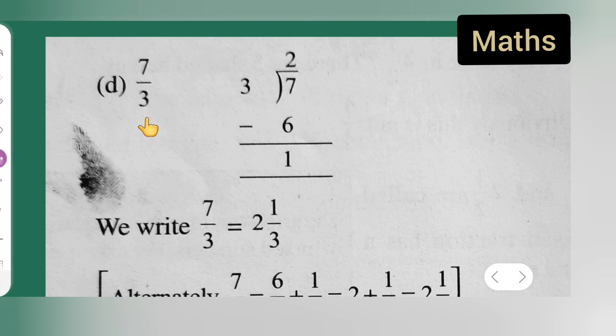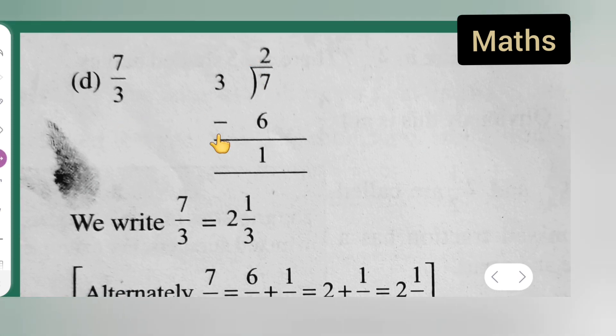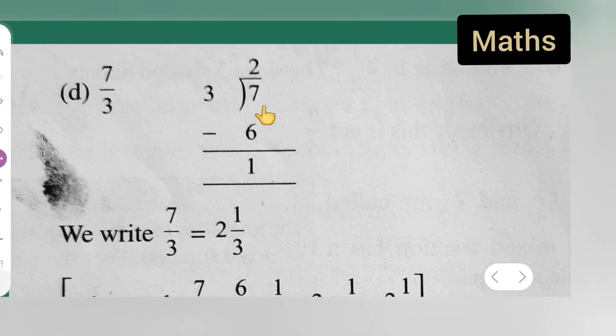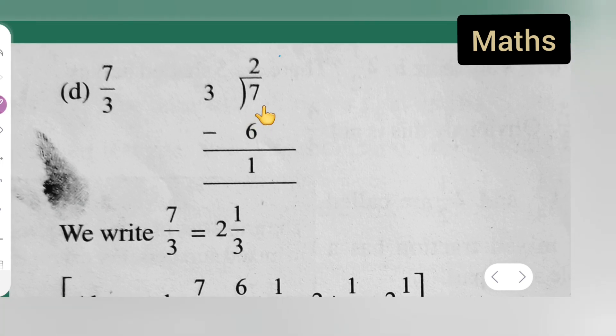So you can take down this. First, you all have to divide and see, okay. Now next, what you all have to do is, now basically this is your quotient, right? This is your quotient, this is your divisor, okay, and this is your remainder.